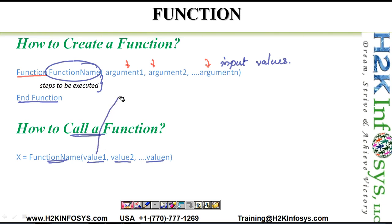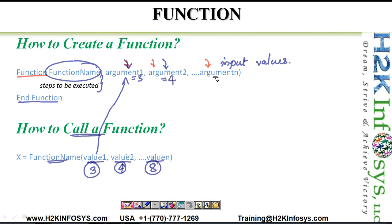The input values are passed to the function arguments in the same sequence. For example, if you pass values 3, 4, and 8: value 3 goes into argument 1, value 4 goes into argument 2, and value 8 goes into argument 3. You need to take care of the sequence of the values. To collect the result, you declare a variable which will store the return value of the function. This is how you create and call a function.